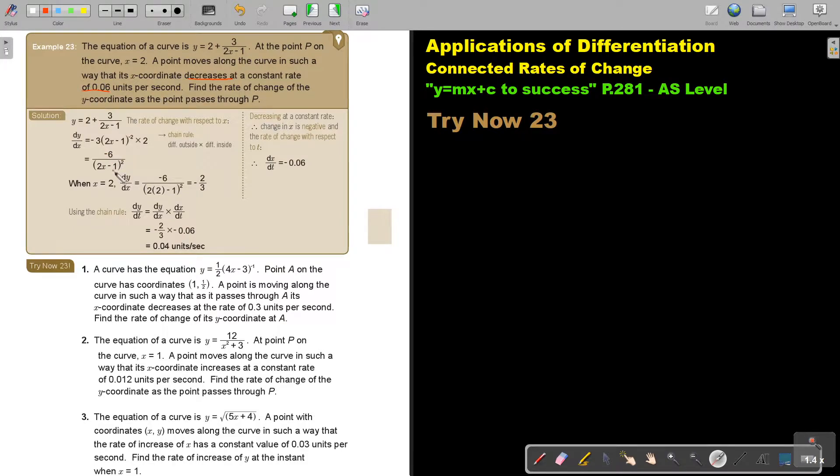This is my derivative function. Now when X is 2, so don't forget, when X is 2, I substitute 2 and I get negative 2 over 3. This is my first part.